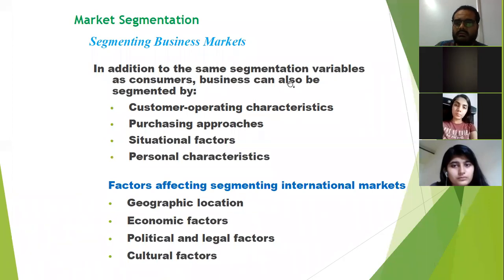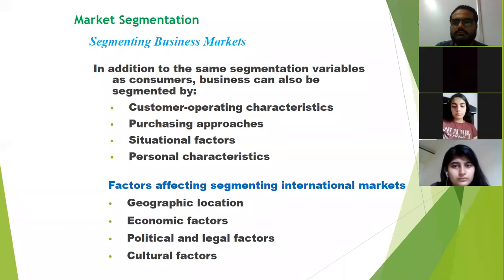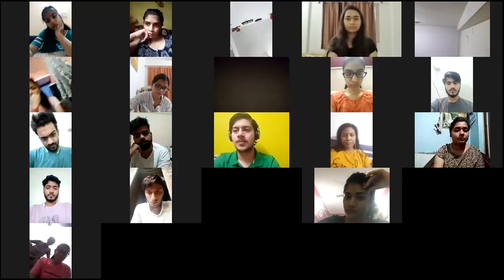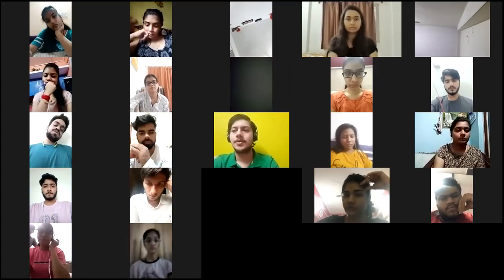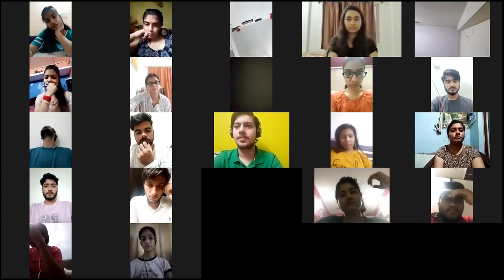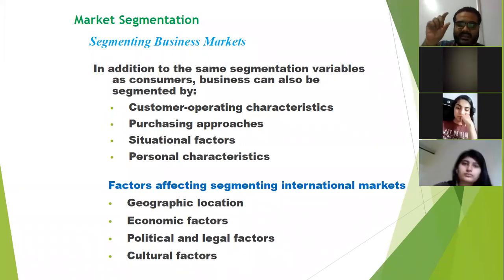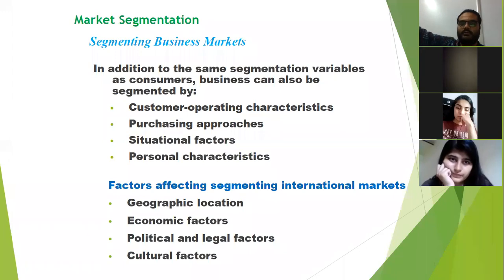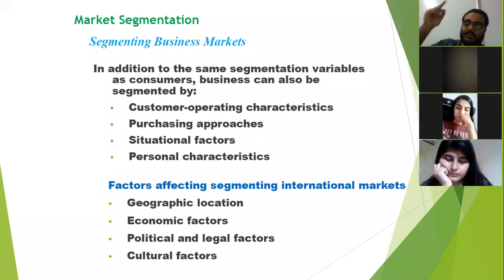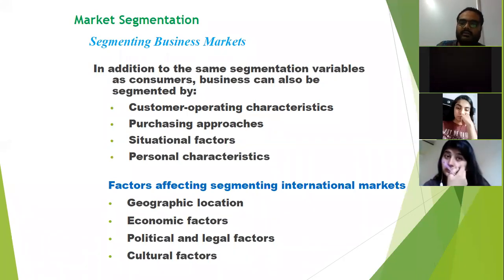Finally, there are personal characteristics — these can be the personal characteristics of the businesses in that particular market. It can be the product characteristics, or the characteristics of the eventual customer to whom the product will go. This is how you segment a business market. You can use all the techniques and methods studied in the consumer market, and you can also segment business markets on these four characteristics: customer operating characteristics, purchasing approaches, situational factors, and personal characteristics.